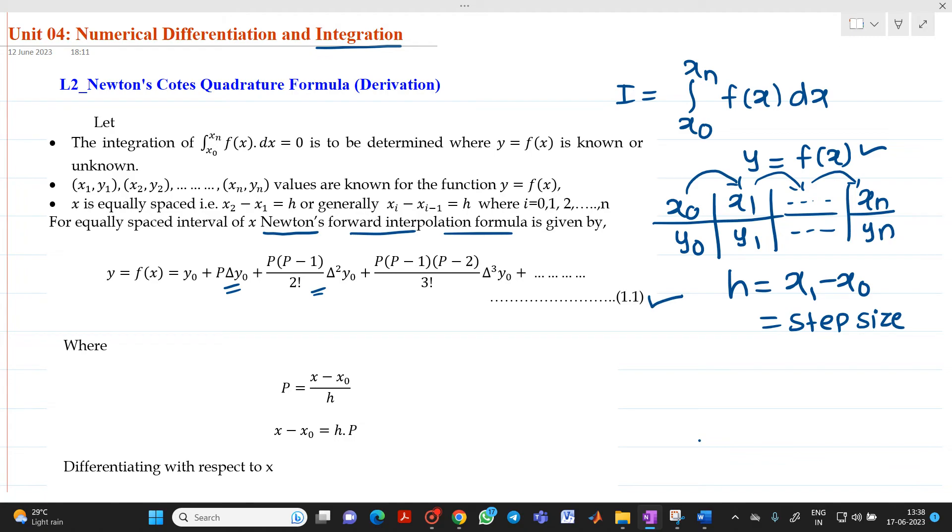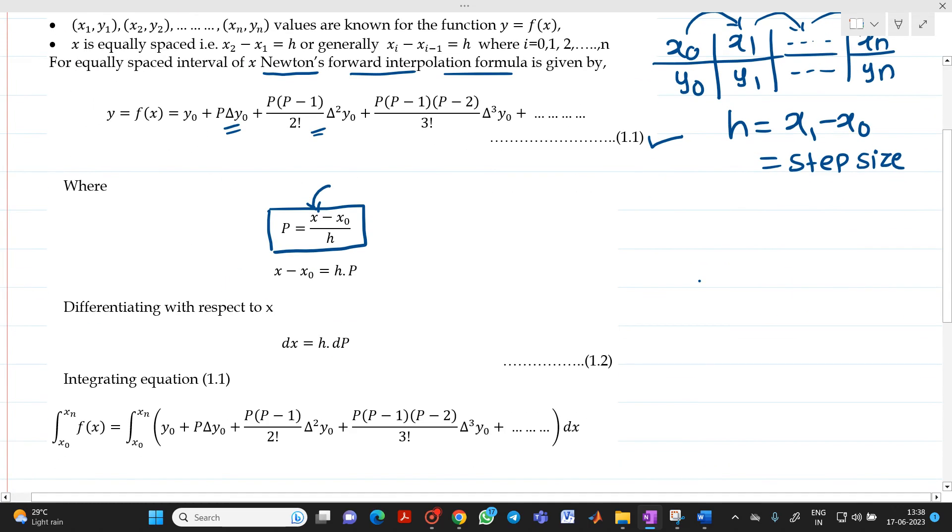Where we know the value of p is x minus x0 upon h, where x is the interpolated value, the value of x for which we have to find the value. From this, I will shift h to the left hand side, so x minus x0 will be equal to h into p.